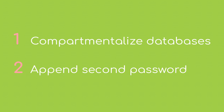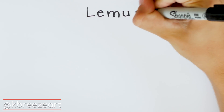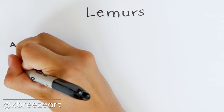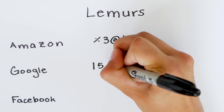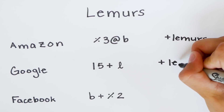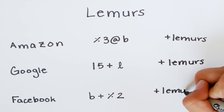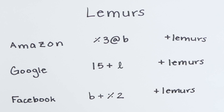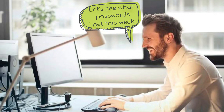The second thing you can do is to memorize a second password that you can append at the end of your passwords within your vault. For example, let's say you remember the password 'lemurs'. You can randomly generate your secure passwords in the password manager, but when you use it online, you add 'lemurs' to the end of the random passwords. This way, even if someone breaks into your password manager, they still can't get into the accounts because they don't know to add 'lemurs' to the end of each password.